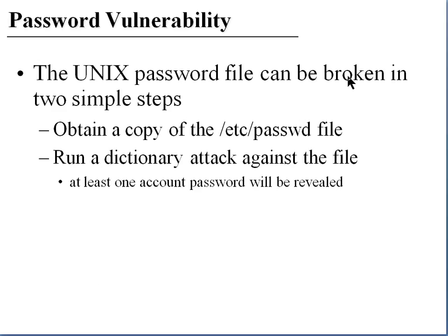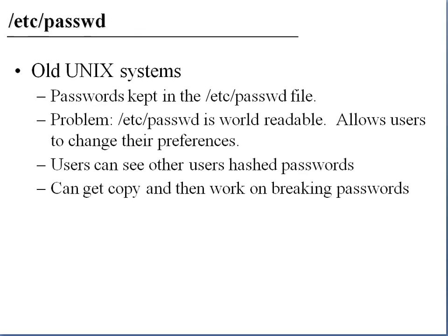What makes passwords vulnerable? With respect to the Unix password file, it can be broken in two simple steps. The first is to obtain a copy of the password file — PASSWD — and run a dictionary attack against the file. This only works on old Unix systems because passwords were kept in the /etc/passwd file, which is world-readable to allow users to change their preferences. So users can see other users' hashed passwords, and if you can get a copy of that file, you can work on those hashes to determine if you can guess a password.